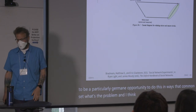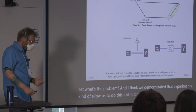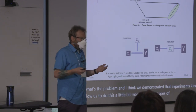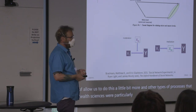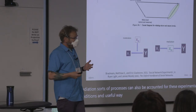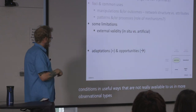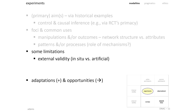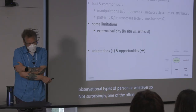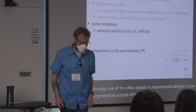Moderation and mediation processes can also be accounted for in experimental conditions in ways that aren't really available in observational research. Not surprisingly, one of the common caveats to experimental designs is how much findings generalize outside of the context in which the experiments were conducted — whether these are artificial environments with real-world implications is sometimes clear, sometimes less so. There have been a lot of frameworks to think about how what's going on inside an experimental condition relates to what's going on outside.